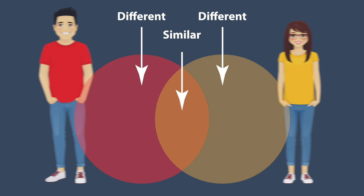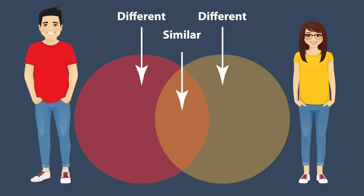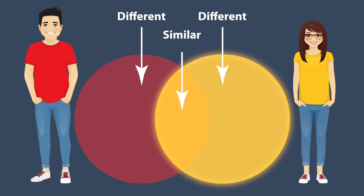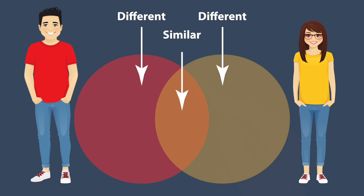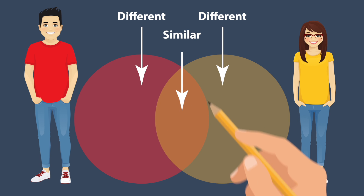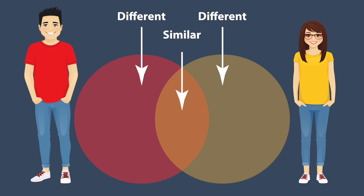Let's compare this man and woman using a Venn Diagram. To make a Venn Diagram, we use two circles that overlap. The red circle is for the man, and the yellow circle is for the woman. The overlapping part is where we write the similarities. Let's find the similarities and differences using a Venn Diagram.